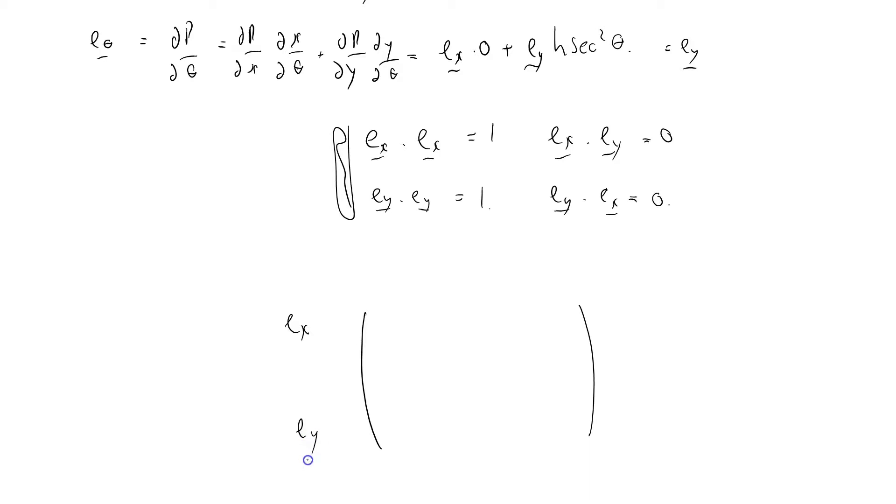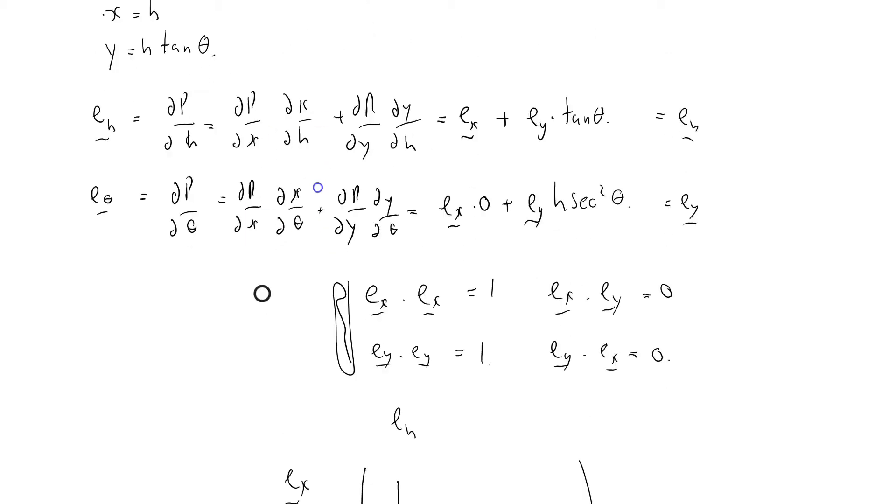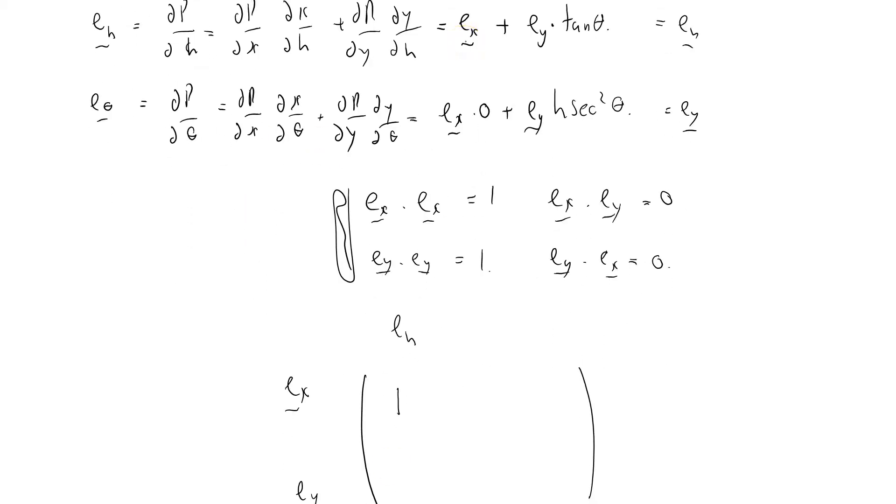So I've got e_x and e_y. E_h equals e_x times 1, which is that term there, plus tan theta. And e_theta equals 0 times e_x plus h sec²θ from that term there.